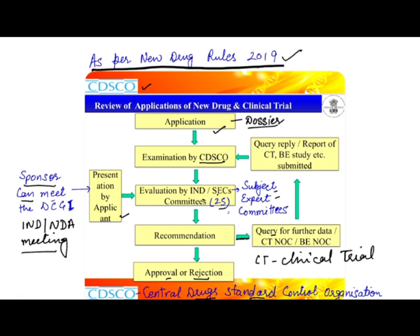If you remember this diagram, it will help you a lot, because students sometimes feel clueless during interviews even though it is a straightforward process. One important clarification: the SECs are with DCGI. Under CDSCO is DCGI, and the Subject Expert Committees are under DCGI. DCGI stands for Drug Controller General of India. After this session, how a new drug is approved in India should be very clear.